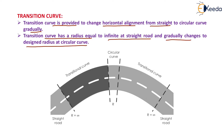We generally provide a transition curve in between the straight alignment of a road and a circular curve, just to introduce the centrifugal force gradually. At the junction of the transition curve and straight alignment the radius is infinite, so the value of centrifugal force — mv²/r — will be equal to 0.